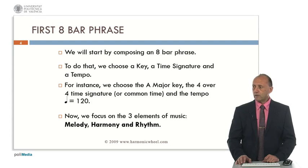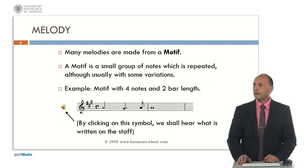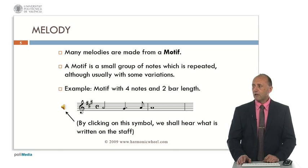Now we focus on the three basic elements of music, which are melody, harmony, and rhythm. Regarding the melody, many melodies are made from a motive. A motive is a small group of notes which is repeated, although usually with some variations. For example, here we have a motive with four notes and two-bar length.